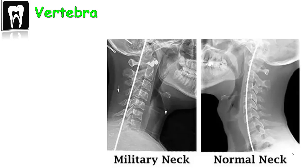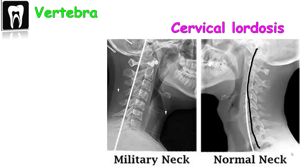The first landmark is the vertebra. In this radiograph, especially in this position, we can see a natural curvature of the vertebra called cervical lordosis. Loss of this curve is important — it can be related to signs of disease in the head and neck, such as retropharyngeal abscess and acute epiglottitis.